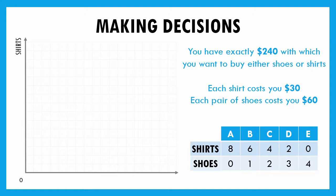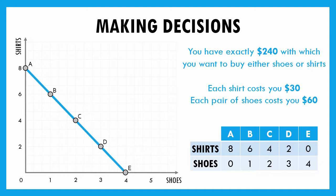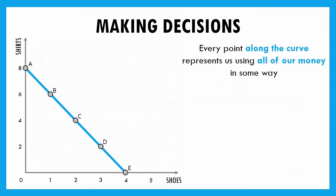We're going to plot those points out. On our y-axis we'll put shirts, and on our x-axis we'll put shoes. We plot out points A, B, C, D, and E, which represent different possibilities for how we could use our $240. Every single one of those points represents us using all $240. We connect those dots into a line, and this line represents any combination where we are spending exactly all $240 — whether only on shirts, only on shoes, or some mix of both.